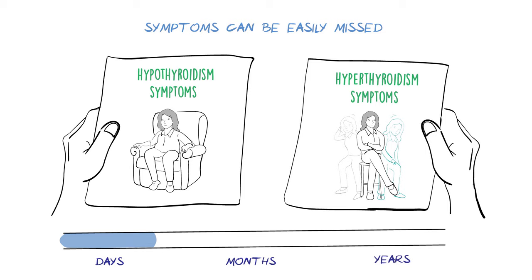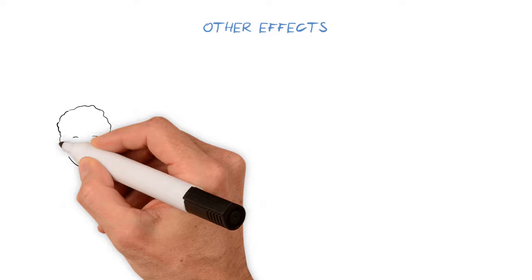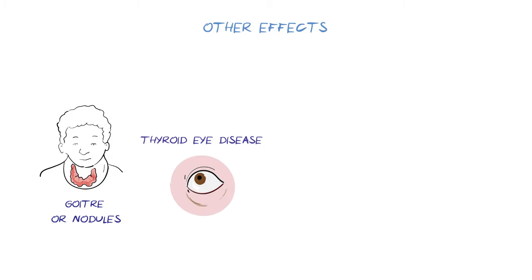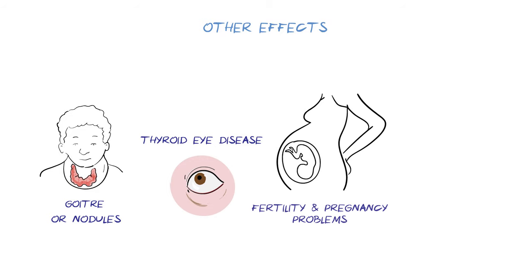Depending on the cause, symptoms may come on quickly over a matter of days or slowly over many months or years. Thyroid disorders may also have other effects such as a swollen thyroid gland, known as a goiter, nodules or lumps on the thyroid, and eye problems, which are most likely to affect people with an overactive thyroid and are sometimes called thyroid eye disease. Uncontrolled thyroid disorders can also lead to problems with fertility and pregnancy and long-term heart problems. Therefore, it is important to get a diagnosis even if symptoms are mild.